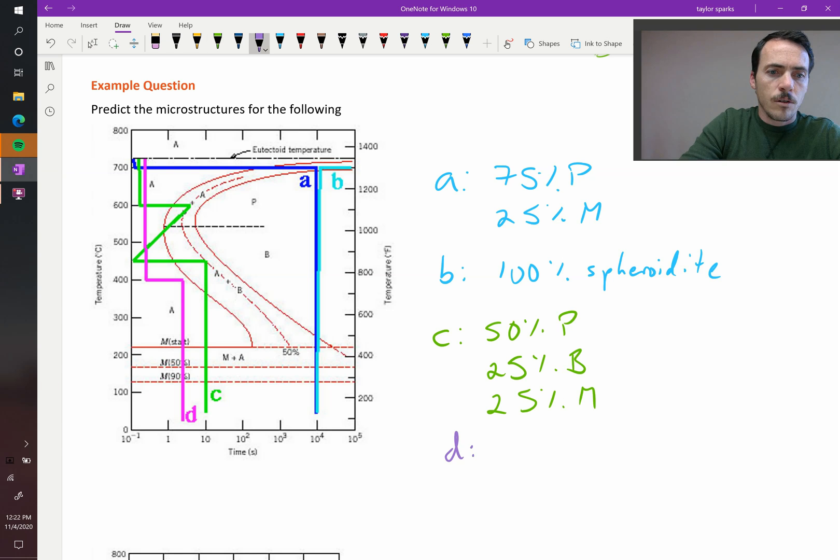What about D? For D, we now have that we quench it and we hold it out to here, but since it never touches that line, we never start forming bainite, and then you quench it straight down, so you end up with 100% martensite.